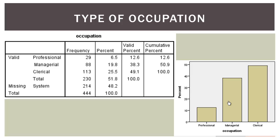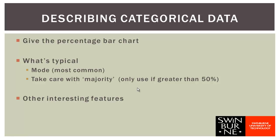The main feature we're looking for when describing the distribution of a categorical variable is what's the most common category. Here the most common occupation was clerical, with 49%. We need to be really careful with the use of the word majority. In this example, 49.1% of respondents were in clerical jobs — that's not a majority. It's the most common response, but you can only use the word majority if the percentage is greater than 50%.